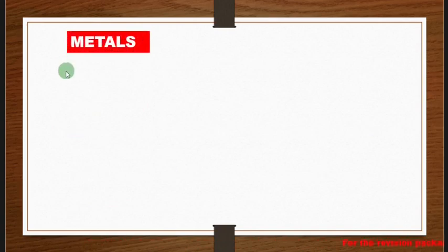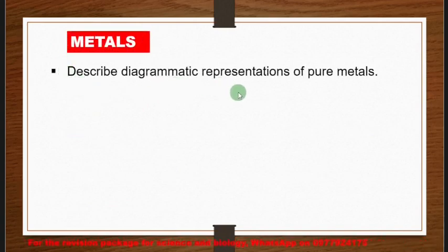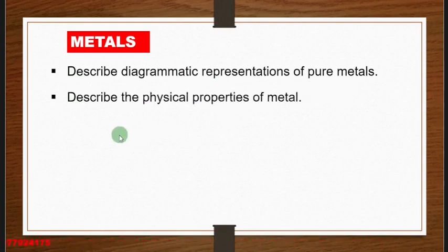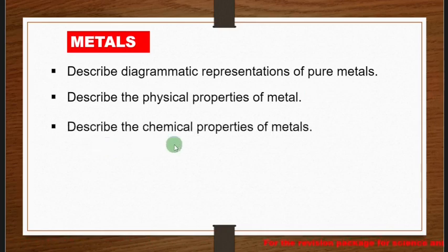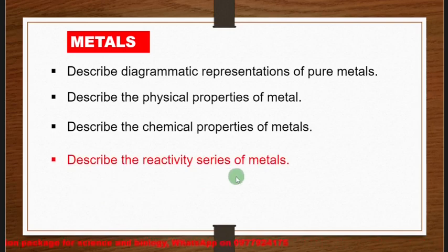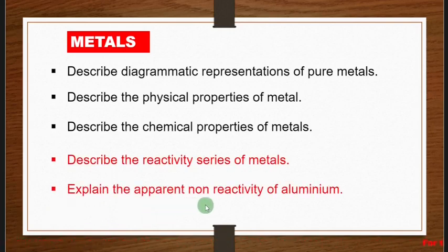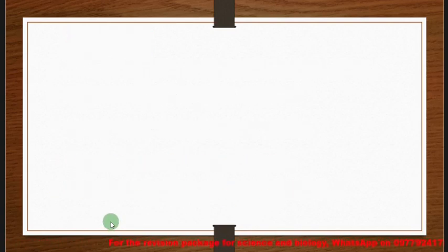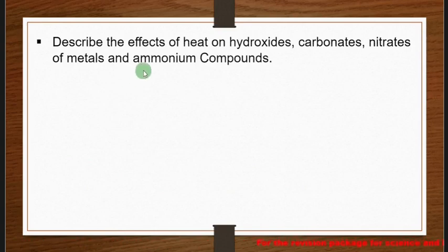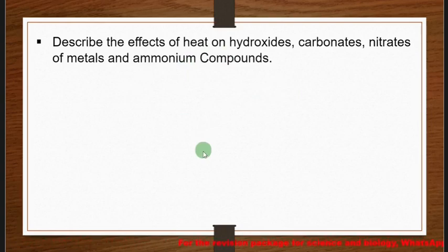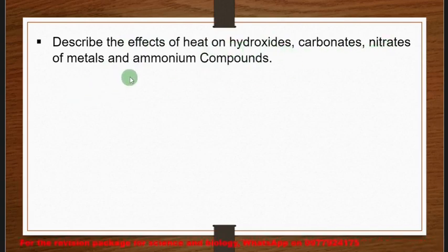Under the topic of metals, you must be able to describe the diagrammatic representation of pure metals, describe the physical and chemical properties of metals, describe the reactivity series, and explain the apparent non-reactivity of aluminum. You also need to describe the effects of heat on hydroxides, carbonates, and nitrates of metals and ammonium compounds. The full topic on metals is available on demand for a payment of 60 kwachas.